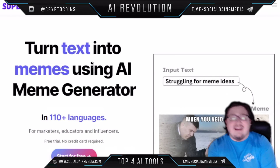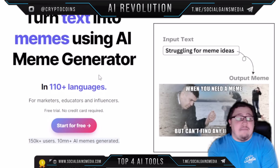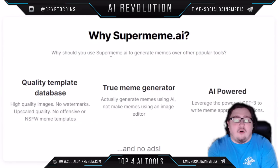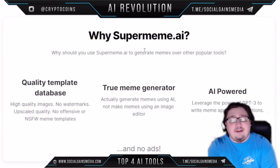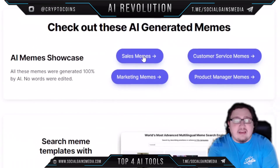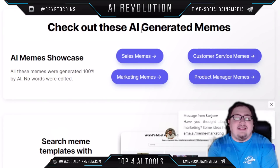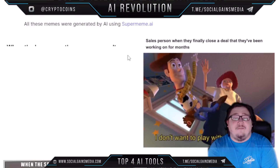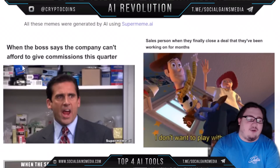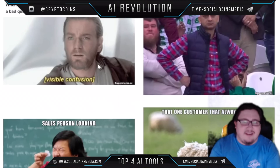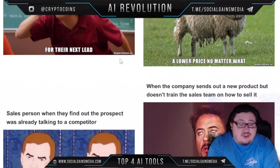The next AI tool is really cool — it's called supermeme.ai. Basically, you're able to turn text into memes using an AI meme generator, and it is free. You can convert any text to a meme or a GIF. They have a quality template database — a true meme generator — so you're actually generating memes from a text input on any topic. For example, they have 35-plus funny sales memes, like 'when the boss says the company can't afford to give commissions this quarter.' You can use these memes for posting to friends or building a social media following.